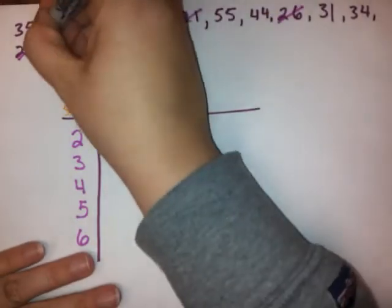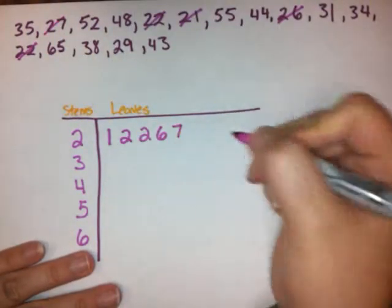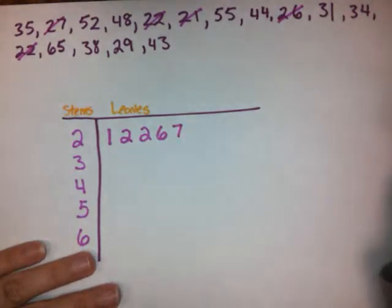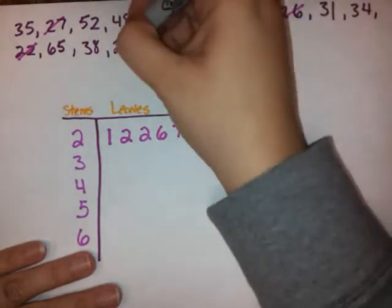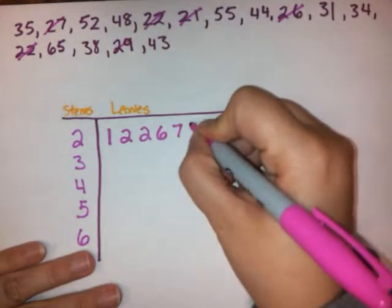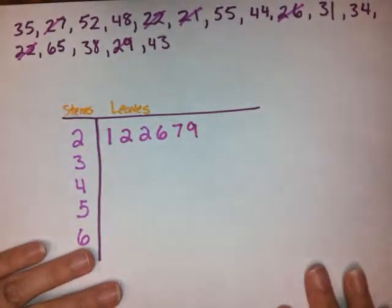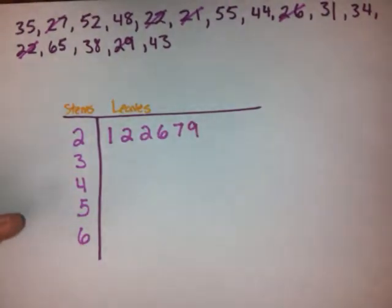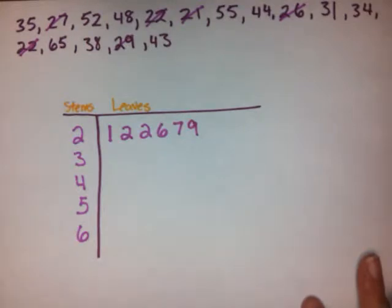I have a 27. I've got a 27 here, so I'm going to put my 7 here. Do I have any 28s? Nope. But I do have a 29. And those are all of the 20s. I've taken care of all of the 20s from my data set.